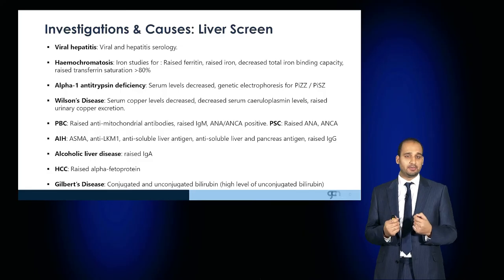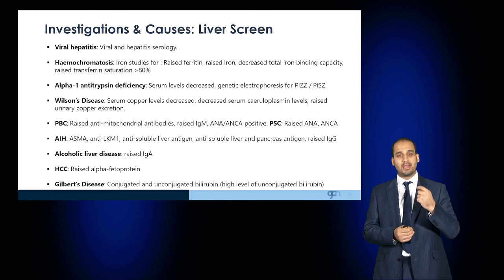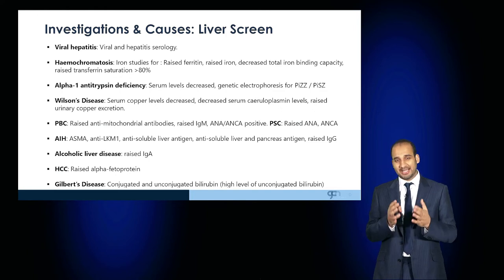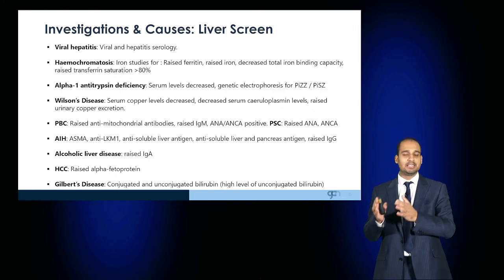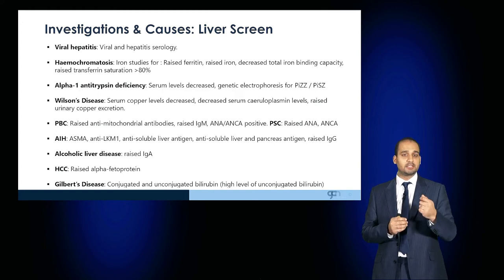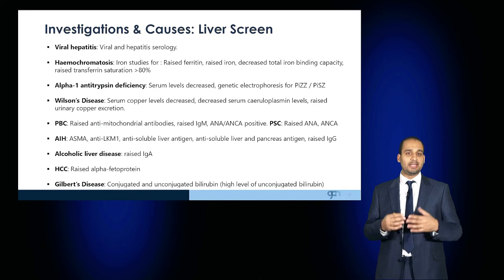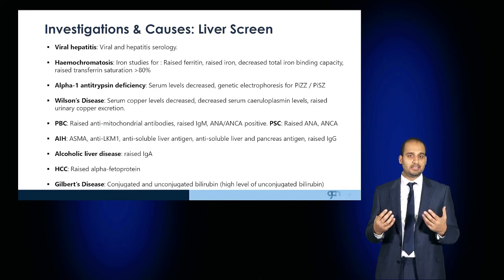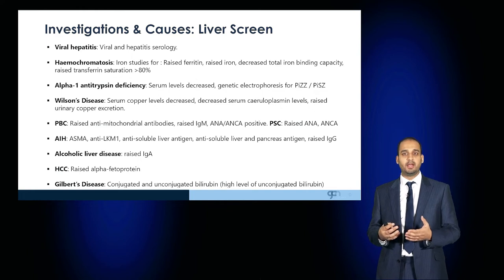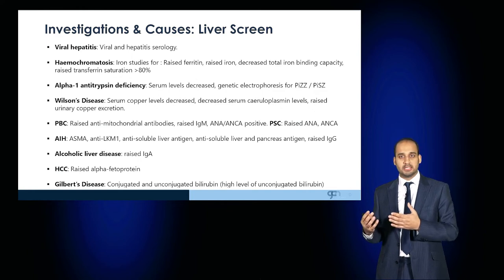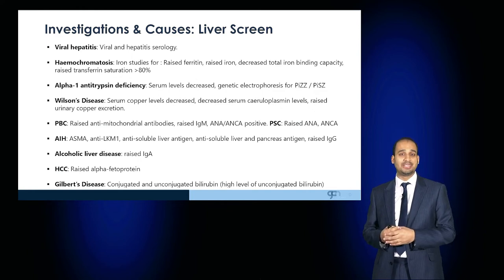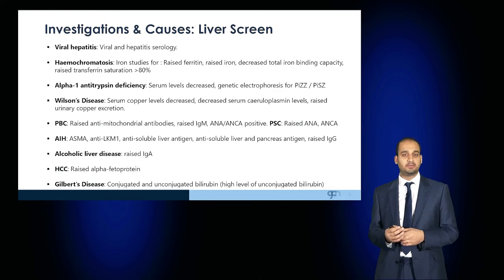The liver screen helps determine the cause of liver failure. A viral screen allows you to identify which virus is affecting the liver. If suspecting haemochromatosis, iron studies are important: elevated iron, elevated ferritin, reduction in total iron binding capacity, or raised transferrin saturation would be suggestive.